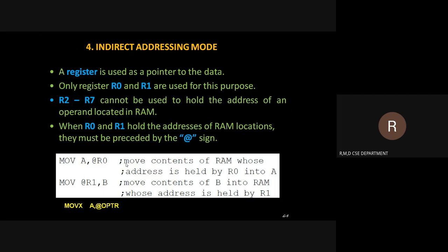In indirect addressing mode, the register is used as a pointer to the data. It moves the content of RAM whose address is held in R0 — whatever address is specified in R0, that content will be moved to the accumulator. For example, suppose I ask you to go to room number 218. You go to 218, but your data is not available there. From there, an indication redirects you to some other location where your record is actually kept. So indirectly I am specifying the address — that is called the indirect addressing mode.